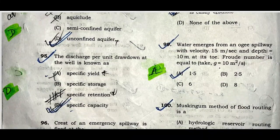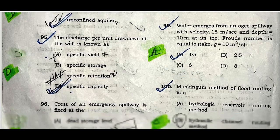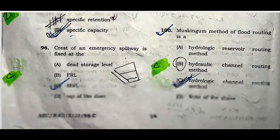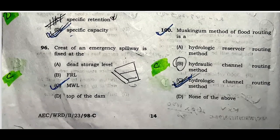Question ninety-nine: Water emerging from an ogee spillway with a velocity of 15 meters per second and depth 10 meters at the toe — the Froude number is equal to 1.5. Question one hundred: The Muskingum method of flood routing is a hydraulic channel routing method. Option C is correct.